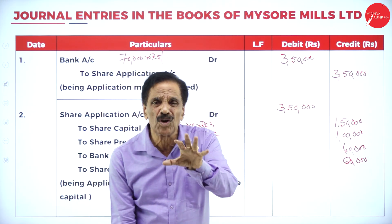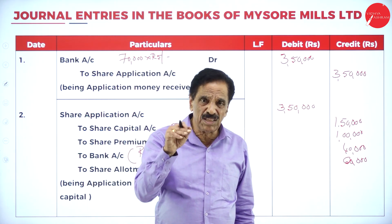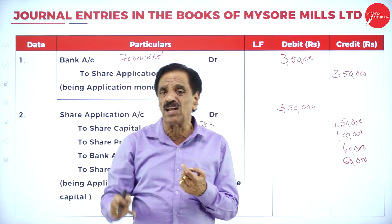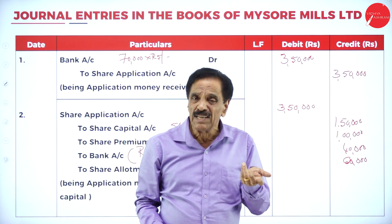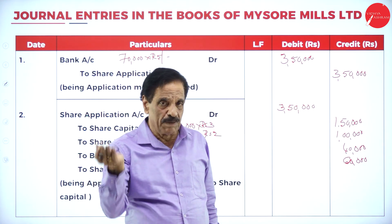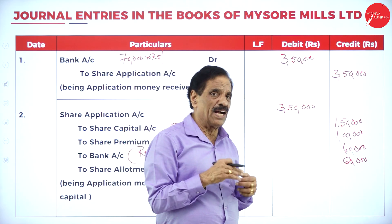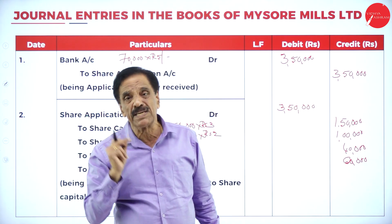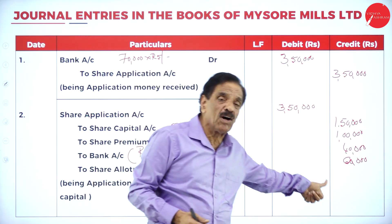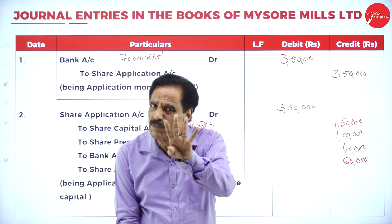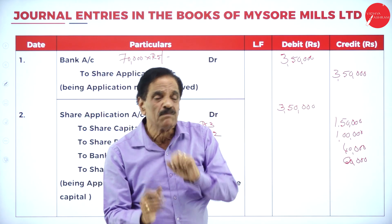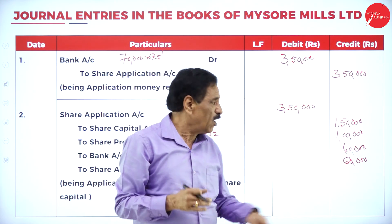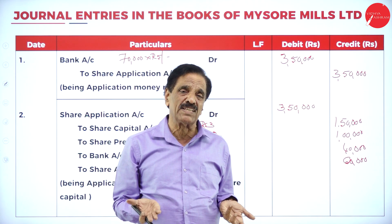Think of it like an electricity bill — if your monthly bill is ₹1,000 but you pay ₹1,200, the extra ₹200 is prepaid and adjusted next month. Similarly here, applicants paid ₹60,000 more toward allotment, so when collecting allotment, the company collects less. Total allotment due is 50,000 × ₹4 = ₹2,00,000. Since ₹60,000 is already received, the balance to collect is ₹1,40,000.